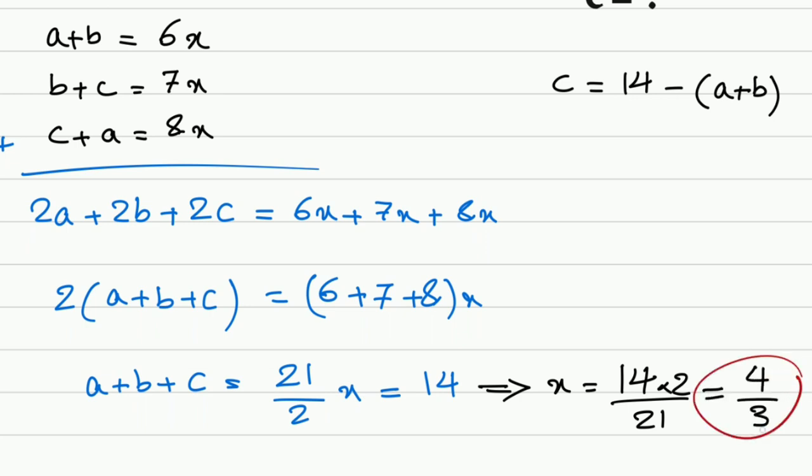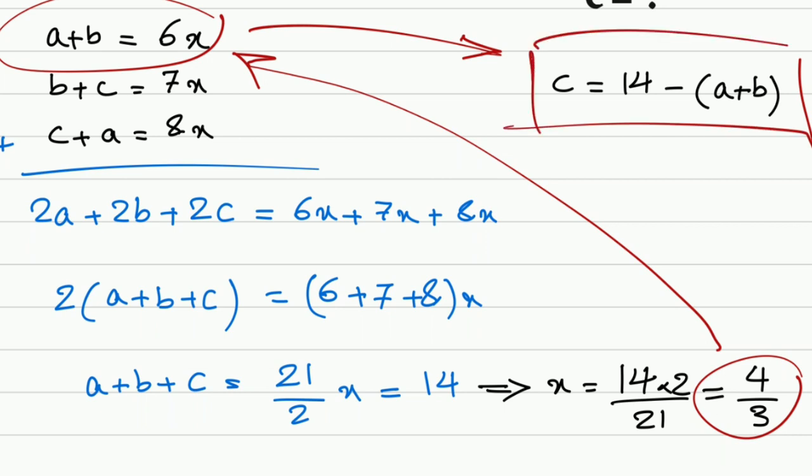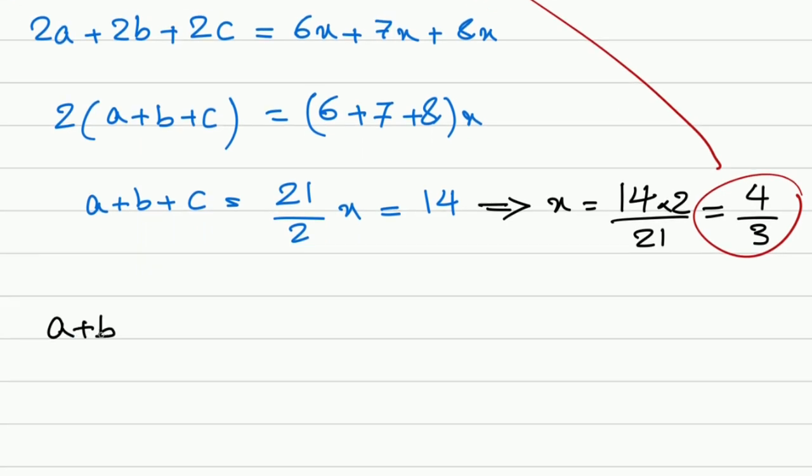Now we have x. Let's get back here. We have a plus b, and then from there we have our answer c. So a plus b is 6 times x, and that's 6 times 4 thirds, and that's equal to 8. And then we have c, that is 14 minus a plus b which is 8. That's equal to 6. The answer is 6.